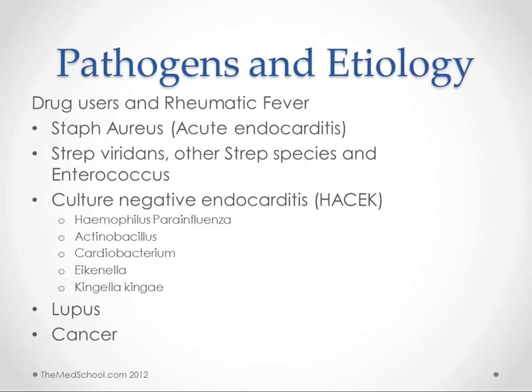So we think about drug users and rheumatic fever as the main populations that get infective endocarditis. Rheumatic fever is declining in the population, so we're going to be seeing less of that, especially as we get into practice later on. But drug users I'm sure we will keep seeing. The major organisms that you see are Staph aureus, which you're going to get from the skin.